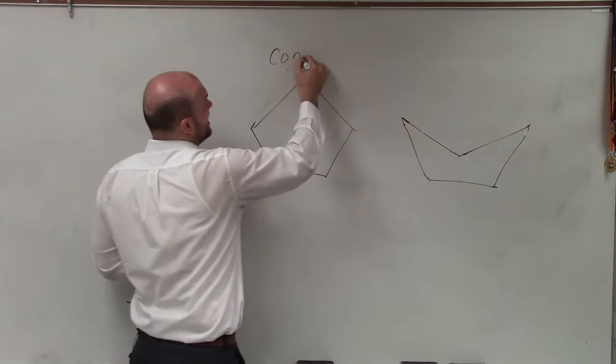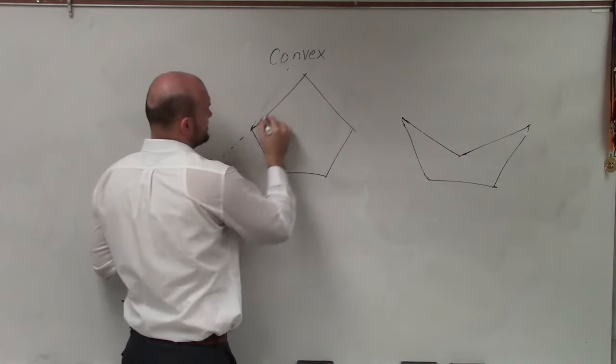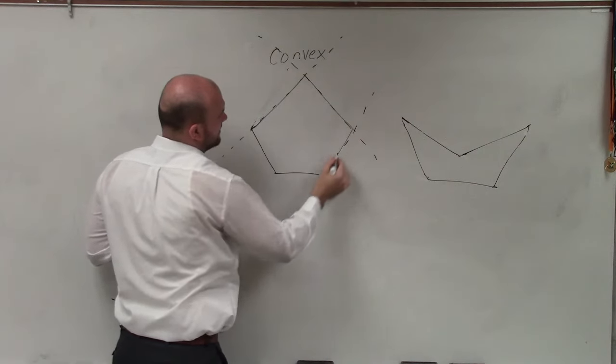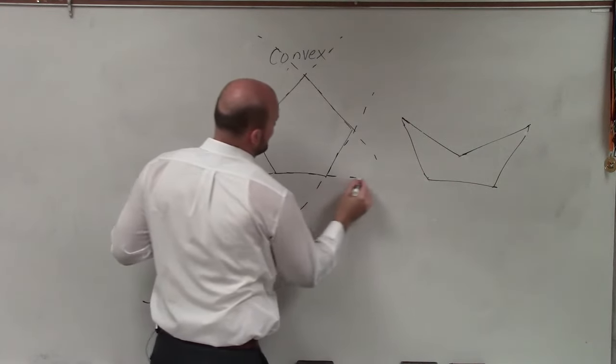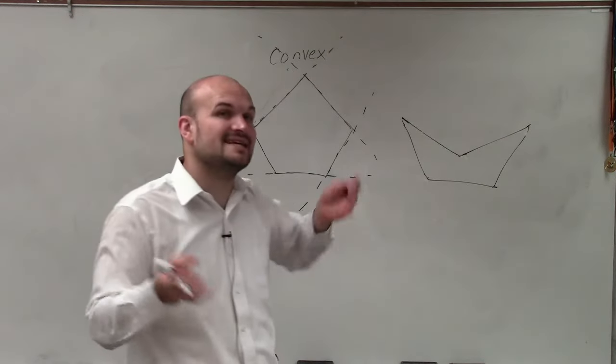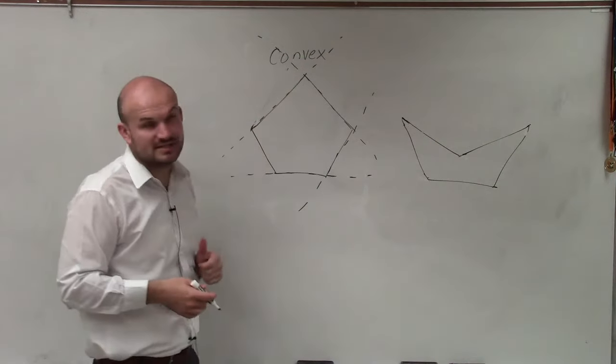When we have a convex polygon, the way that we can determine it is simply by extending all of the sides. And when I extend all of the sides of the convex polygon, you see that none of the sides intersect in the interior of our polygon. Therefore, it's convex.